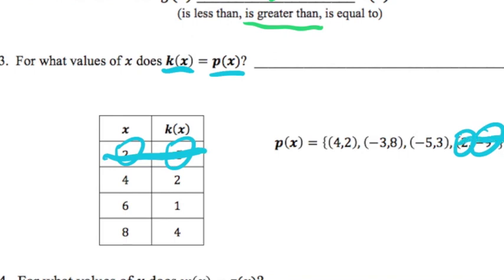However, if we look at four, when x is four, k(x) is two. When x is four, p(x) is two. So four has the same output in both k and p, so our answer is when x equals four.